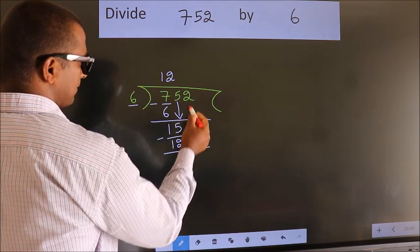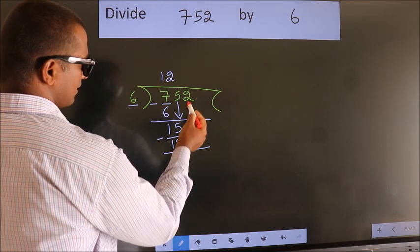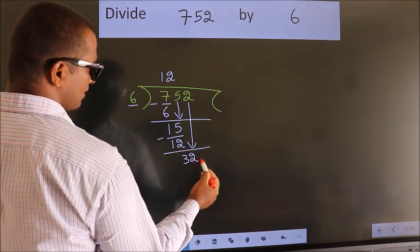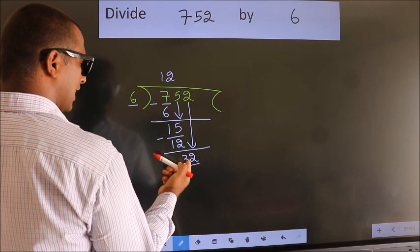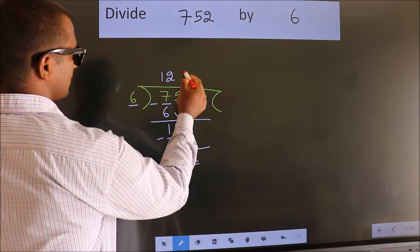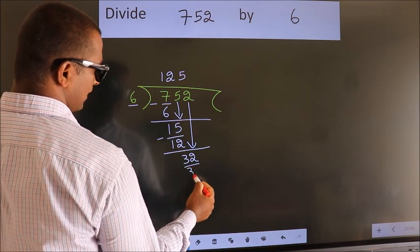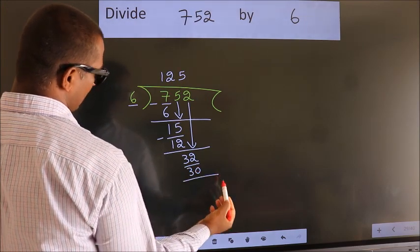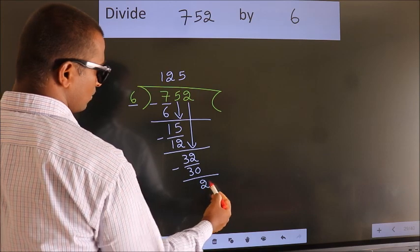After this, bring down the beside number. So 2 down. So 32. A number close to 32 in 6 table is 6 fives, 30. Now we subtract. We get 2.